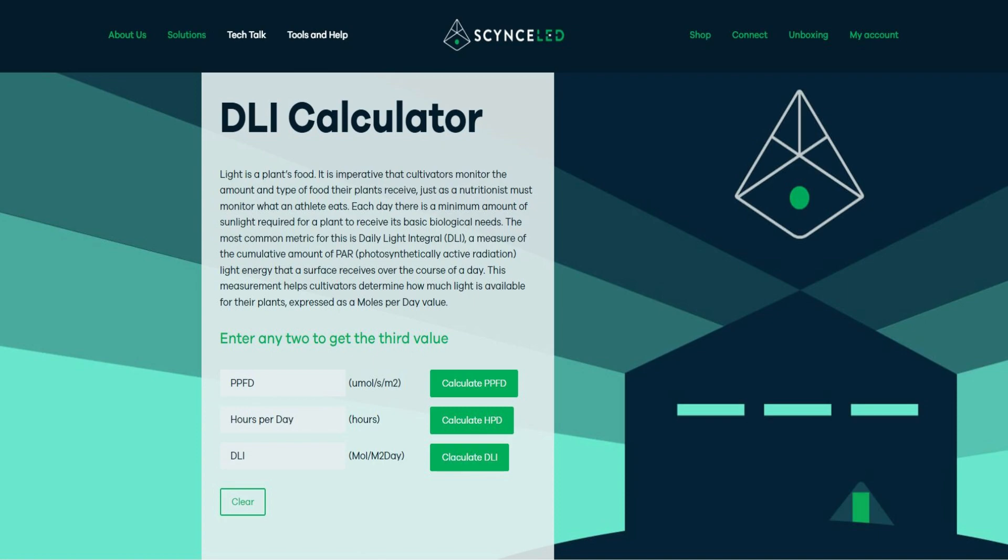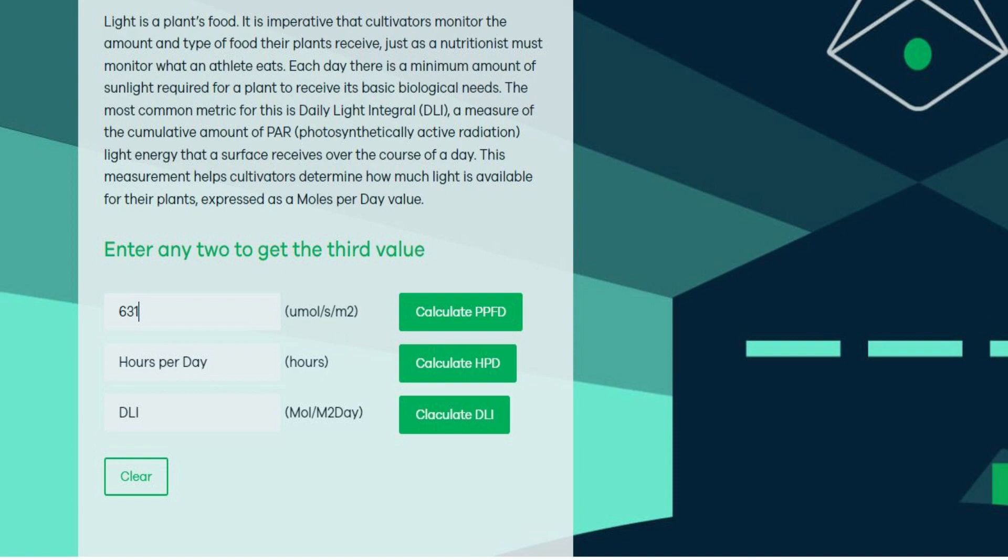And the average for the core area that that light was putting out was around 24 inches by 32 inches. And you can see in the first field that I've entered that PPFD as 631.